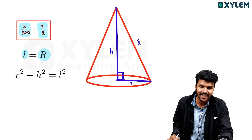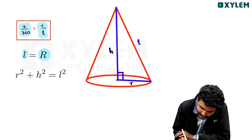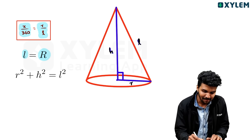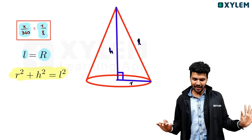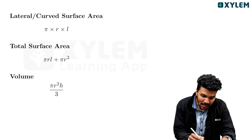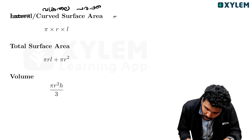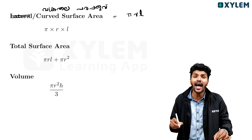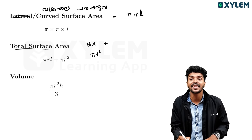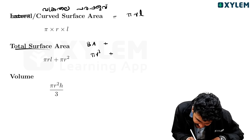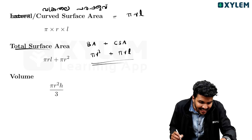That is L - that is the sector. R, H, L. r squared is equal to L squared. The total surface area is pi r L. This is the total surface area by pi RL. We learn from the cylinder and its volume.